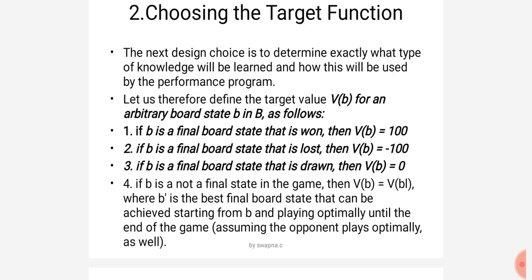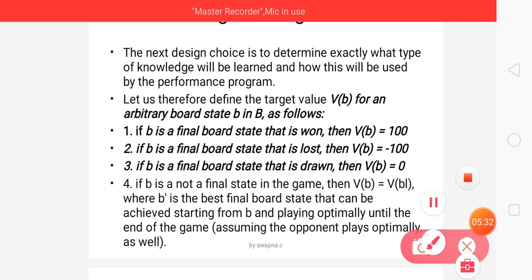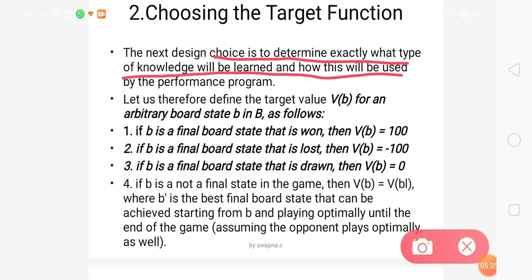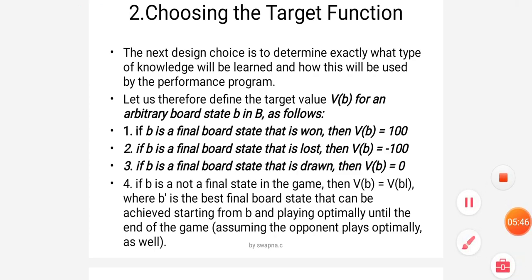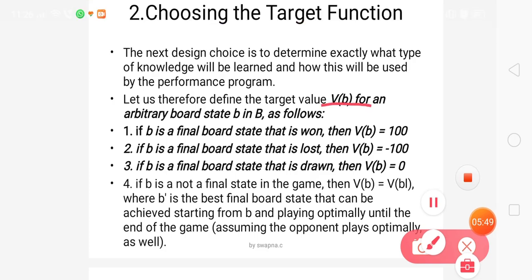The next design choice is to determine exactly what type of knowledge will be learned and how it will be used by the performance program. According to the first step, we use that knowledge to increase the performance of the program by choosing the legal move. We therefore define the target value, represented as V(b) for an arbitrary board state b in the set B. V(b) is what we call the target value — the best move the player chooses from a given state.